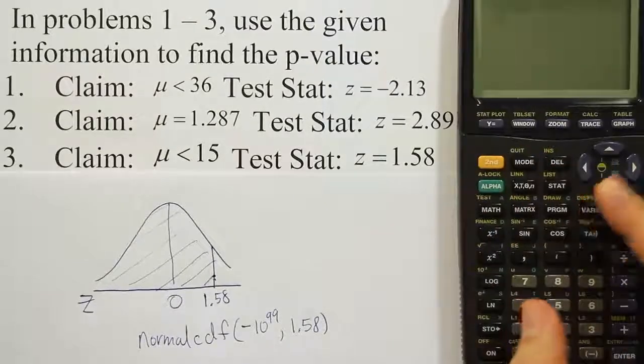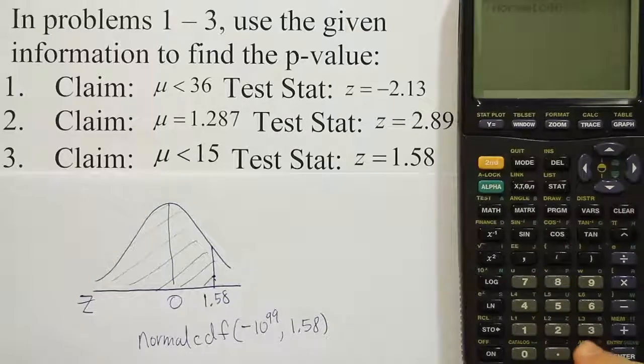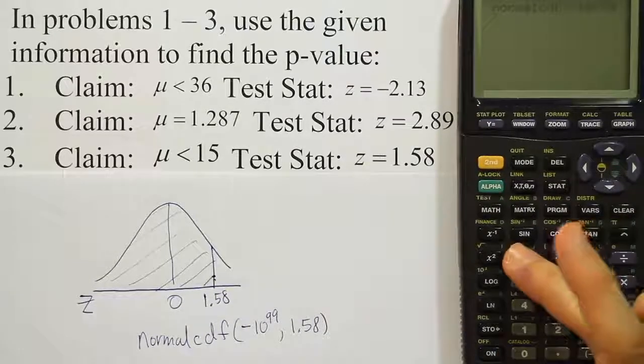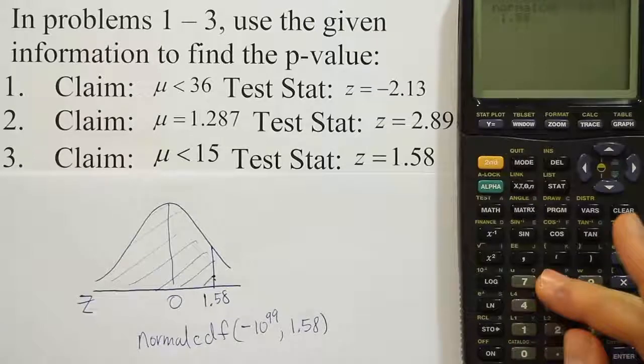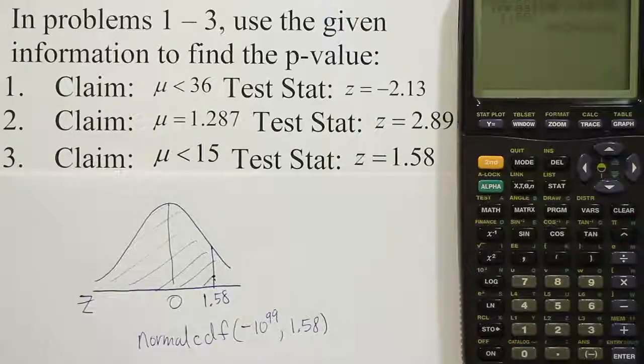so we'll hit second, vars, go down to option 2. We'll use the negative key down here, minus 10 to the 99th power, comma, 1.58. Close up parentheses, hit enter, and you'll get .943.